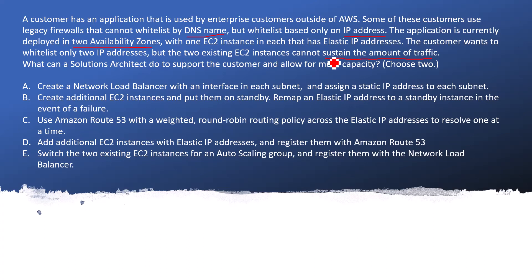Option A: Create a network load balancer with an interface in each subnet and assign a static IP address to each subnet. A network load balancer is required so that it can route the traffic — if one instance is highly occupied it will redirect to another EC2 instance. Providing the network load balancer in each subnet gives us high availability of the network load balancer. So I am marking this as correct.